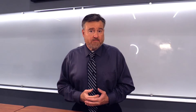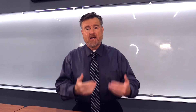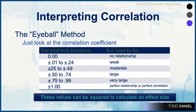Let's put all of these pieces together and learn how we can interpret a correlation. This is the eyeball method — you simply look at the correlation and make a determination of how strong or weak it is. Correlations of 0 have no relationship. Between 0.1 and 0.24, the relationship is weak. From 0.25 to 0.49, the relationship is moderate. From 0.5 to 0.74, the relationship is large. From 0.75 to 0.99, the relationship is very large. In the occurrence of a positive or negative 1 correlation, we have a perfect relationship or perfect correlation.